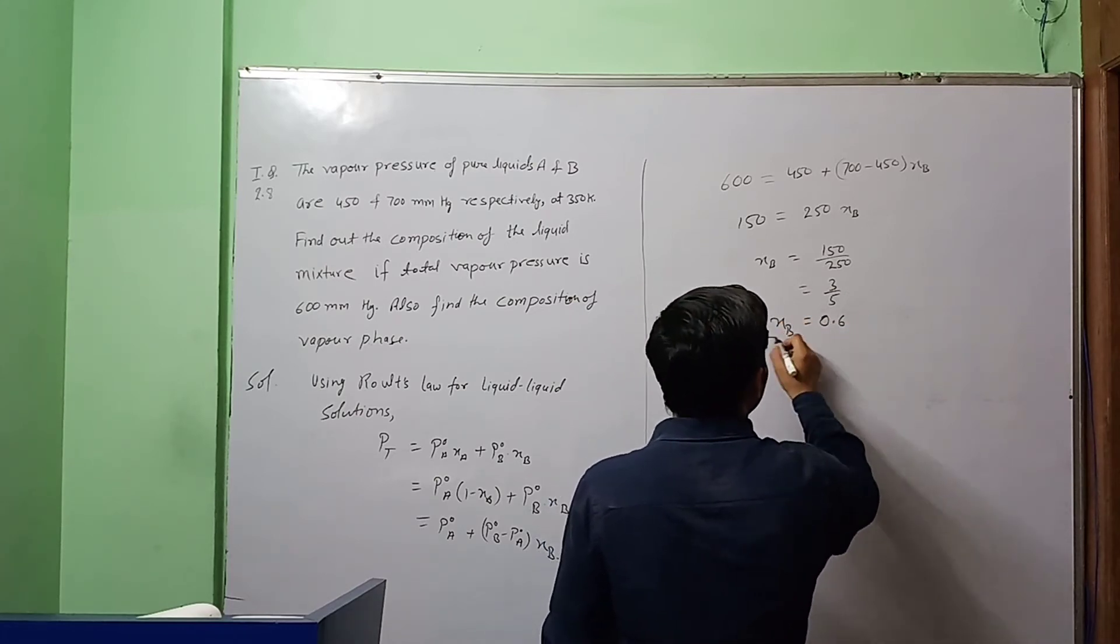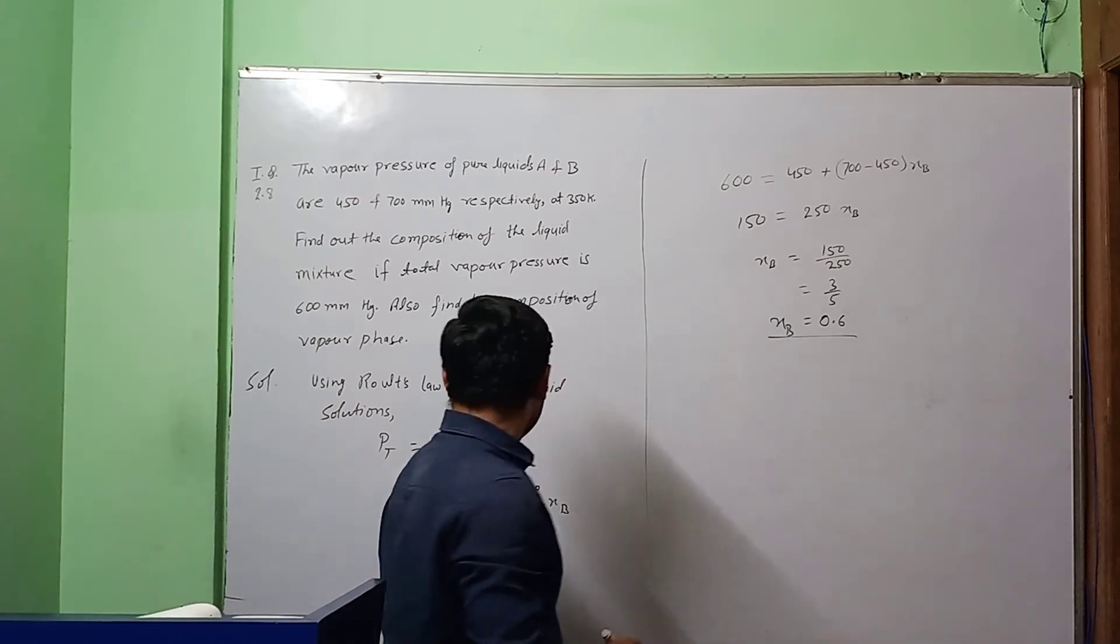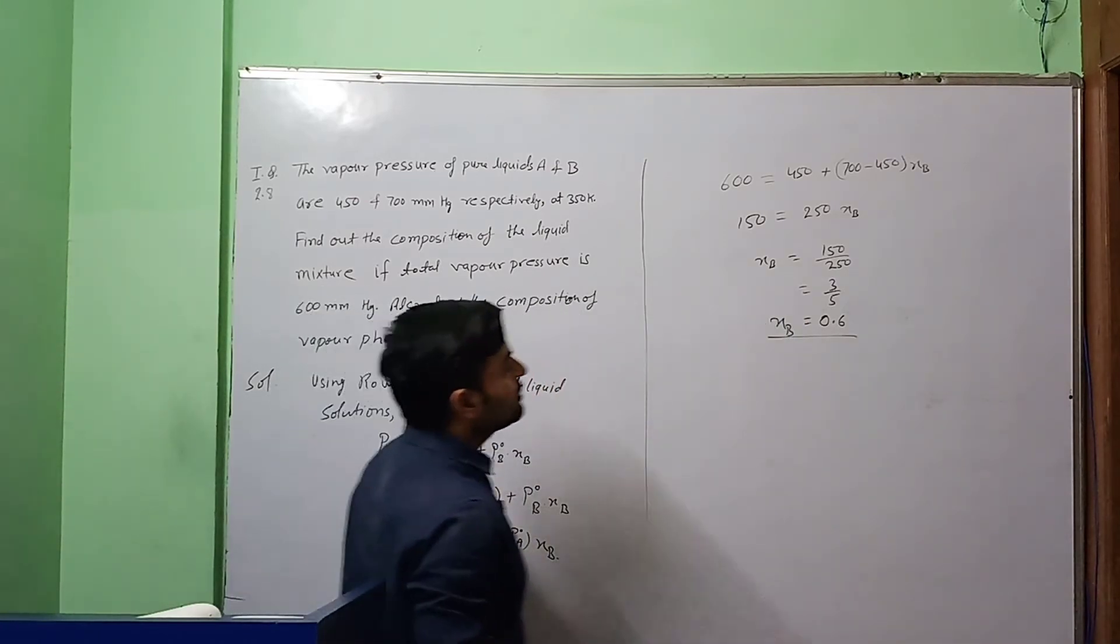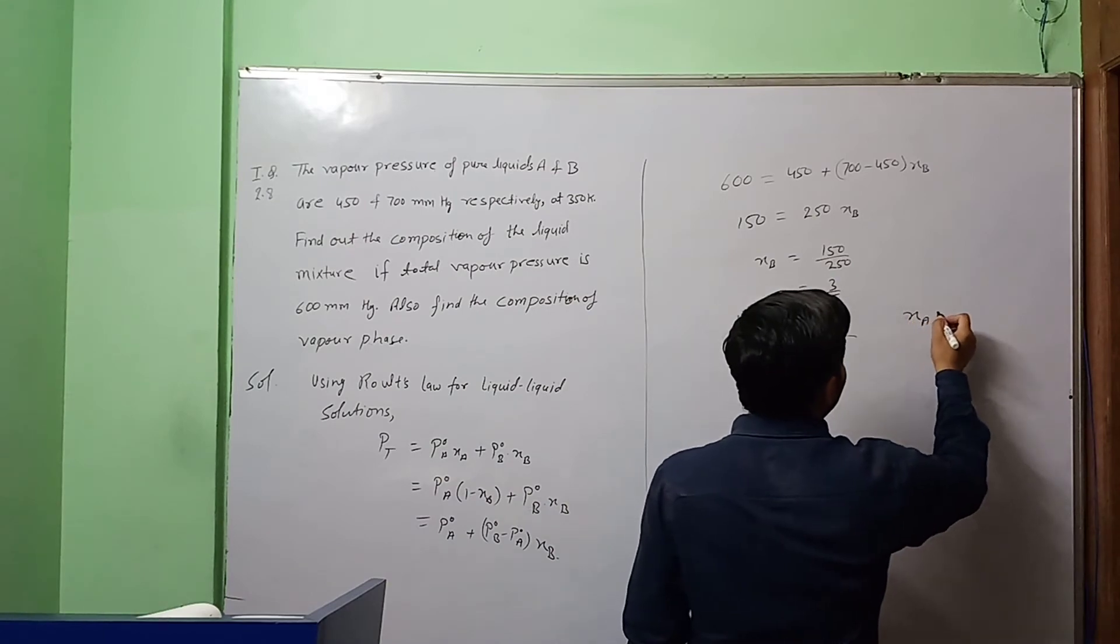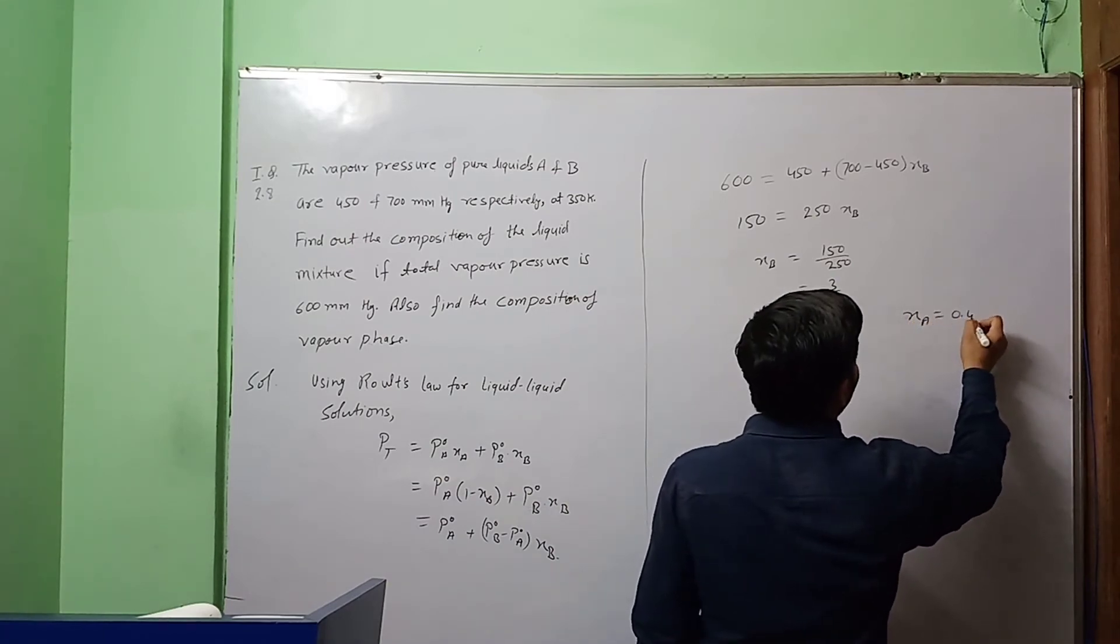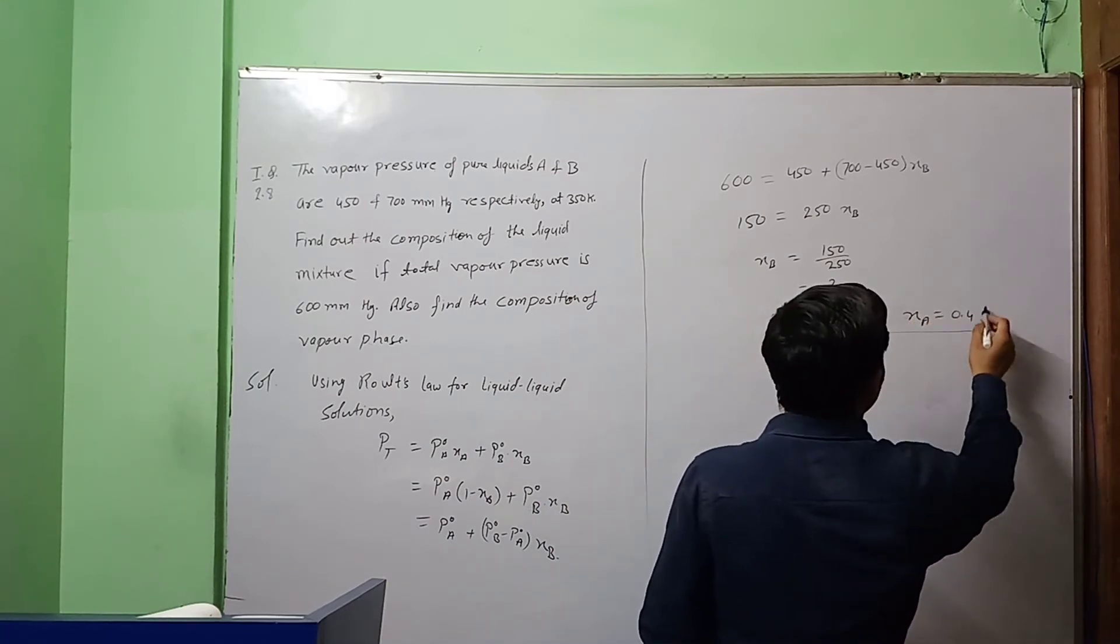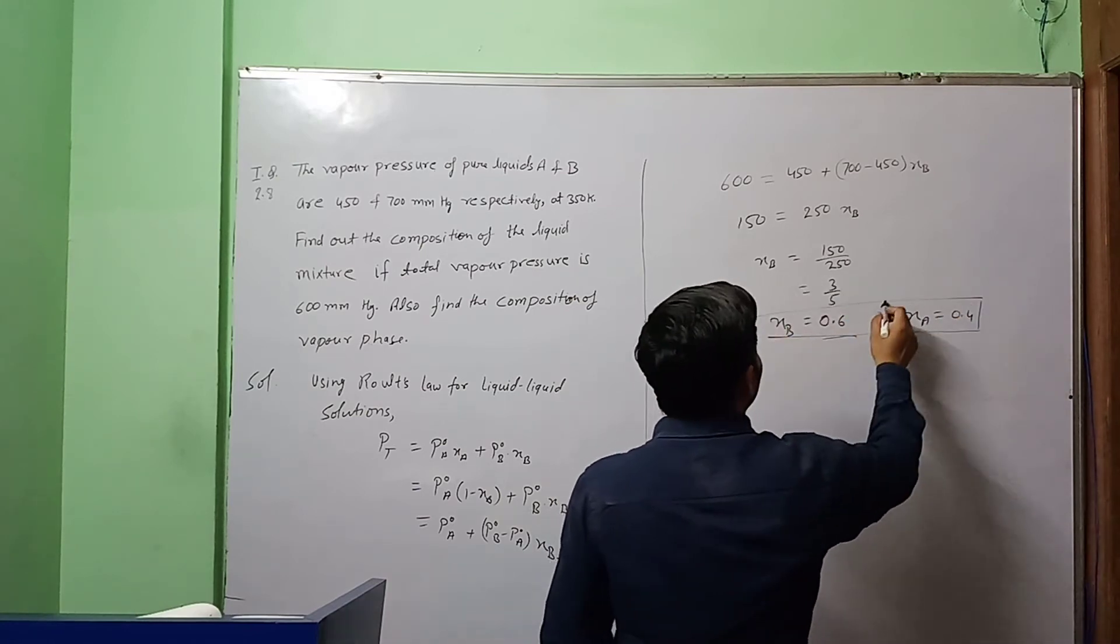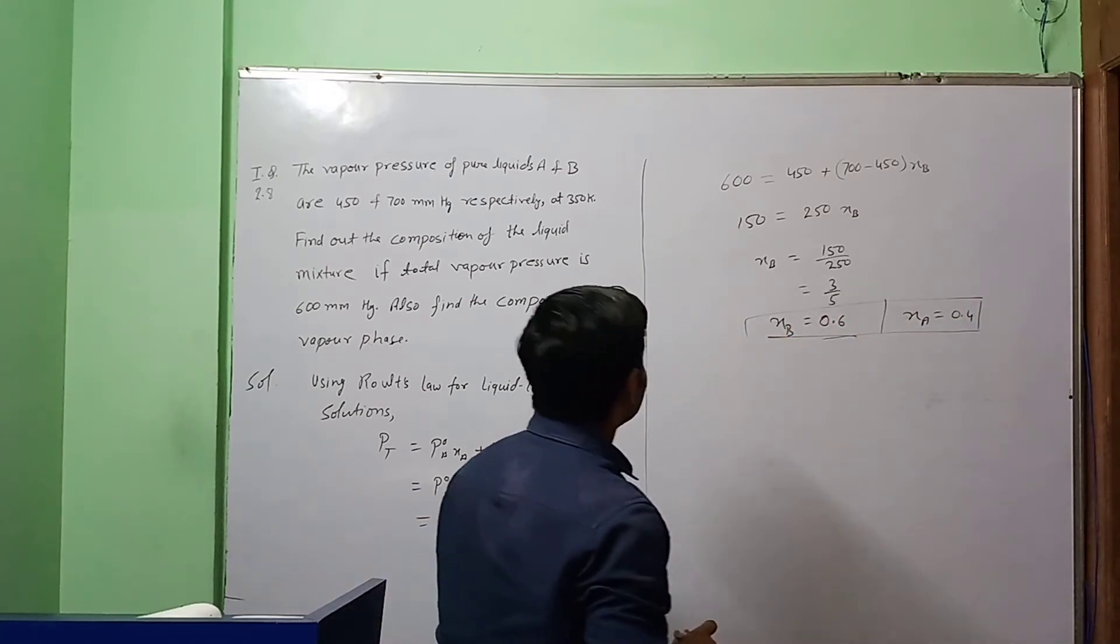XB is equal to 0.6 and XA is 1 minus XB. So we can write XA equal to 0.4. This is the composition of liquid solution.